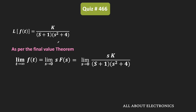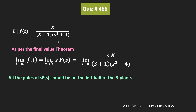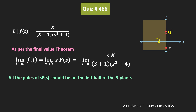If you recall, the final value theorem is applicable only when all the poles of s·F(s) are on the left half of the s-plane. For the given function, one pole is at s = −1, and the remaining two poles are at s = ±2j. So one pole is at +2j and another is at −2j, meaning two poles are on the imaginary axis.